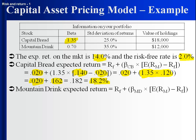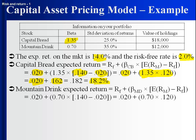How about Mountain Drink? Same approach. If Mountain Drink had no risk, it would get 2% as an expected return. If it had an average amount, it would get an extra 12%. But it doesn't have an average amount — it has a beta of 0.7, so it only has 70% of the average systematic risk. It only gets 70% of the premium an average stock would get: 0.7 times 0.12 is an extra 8.4 percentage points. Therefore, Mountain Drink has an expected return of 10.4%.